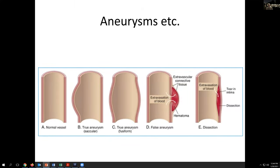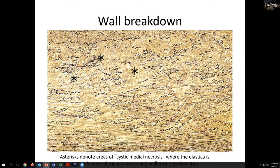Moving on to aneurysms: a normal vessel, a true aneurysm with dilatation either localized or circumferential, and false aneurysms which are due to focal mural rupture with extension of fluid into extramural tissues or potentially dissection within the wall. This can happen particularly when we have areas of weakness in the elastic lamina of the elastic arteries, usually in the aorta. We see areas marked by asterisks where we've lost the normal lamellar appearance of the elastica, with just fragmented scattered areas with interspersed looser areas of ground substance — previously termed cystic medial necrosis, which portended potential damage by dissection.